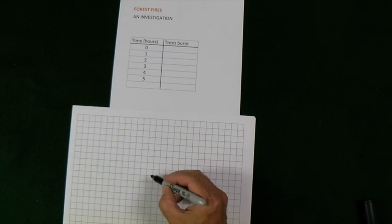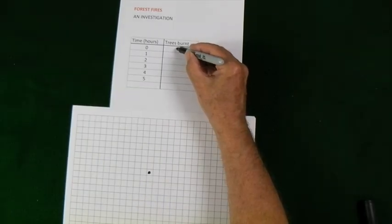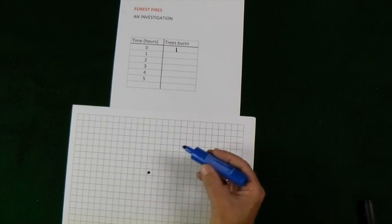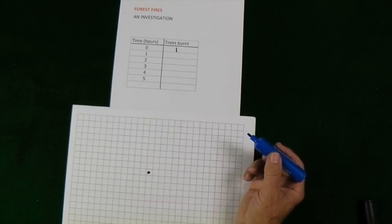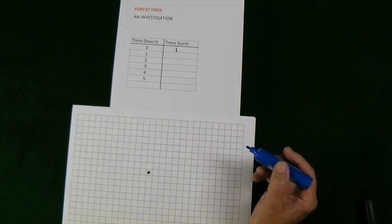A lightning strike sets this tree here on fire. So right at the beginning, I have one tree burning. The fire spreads according to this rule, that in every adjacent square, the tree will catch fire.